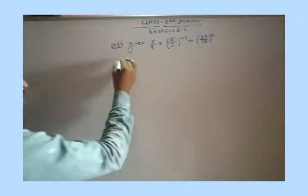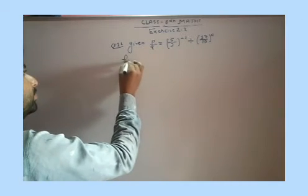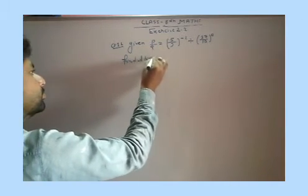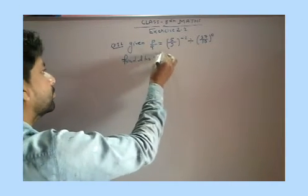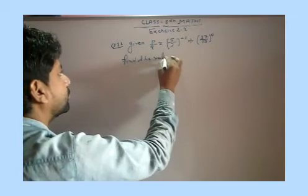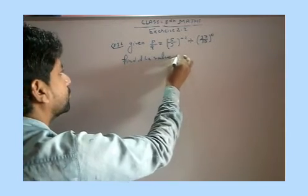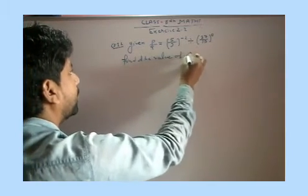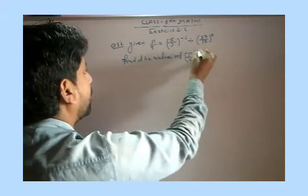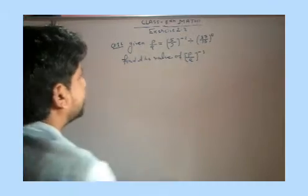Then find: three upon two raised to the power two. Solve.